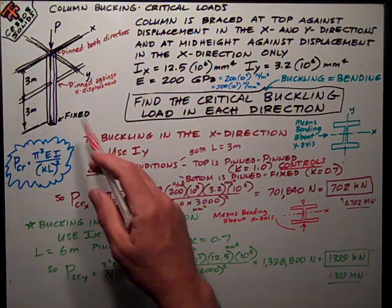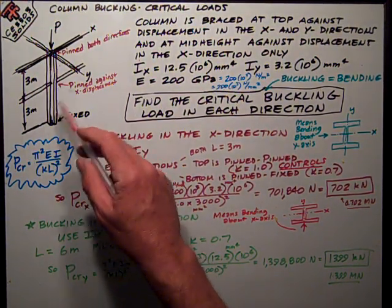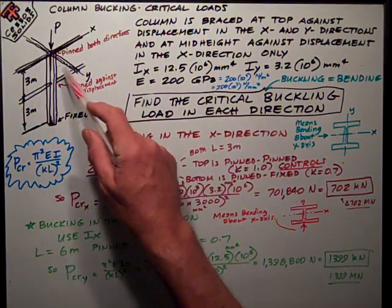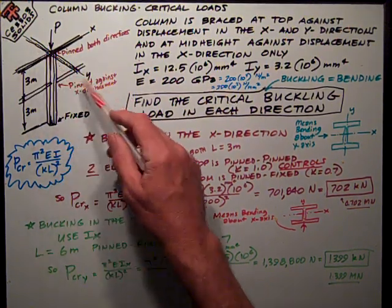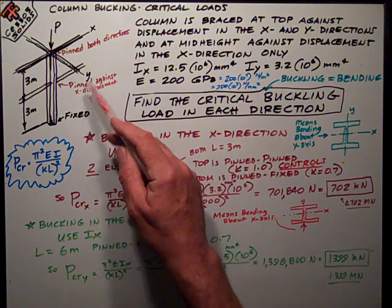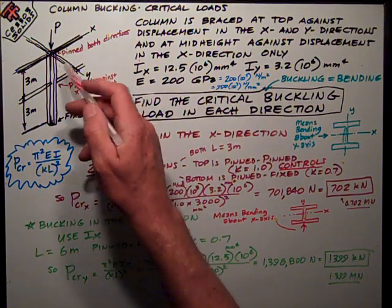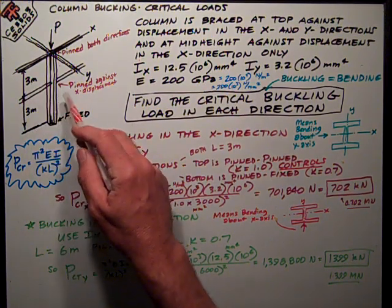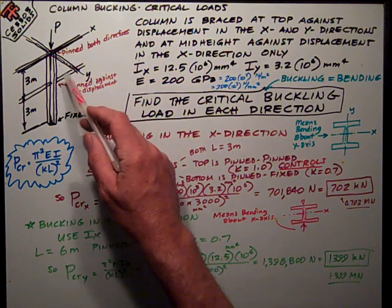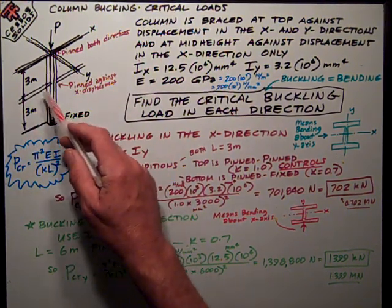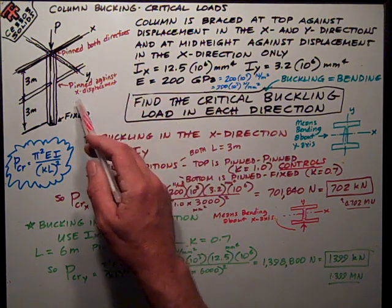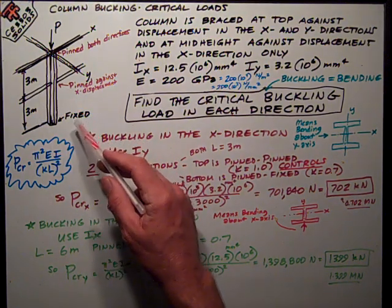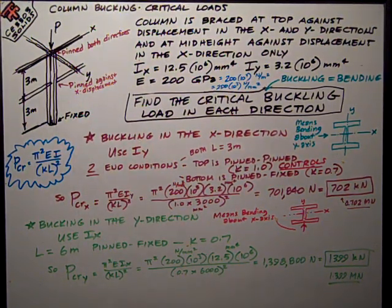but it kind of shows the points. I've got a column, and it's fixed at the base, and at the top, it's got beams framing in that pin it that prevent displacement in the X and Y direction, but they don't prevent rotation, so it's considered a pin connection. At mid-span of the six-meter height, I've got a beam framing in, in the X direction, which is this direction, which prevents displacement in the X direction, but nothing in the Y direction to prevent displacement in the Y direction.